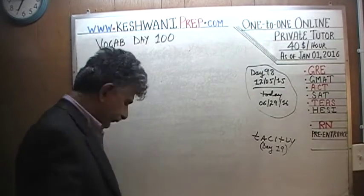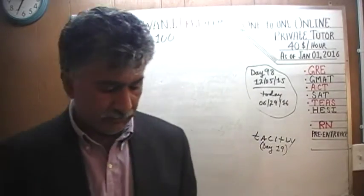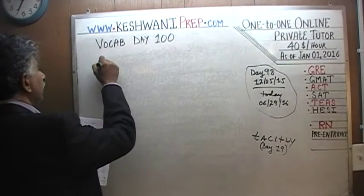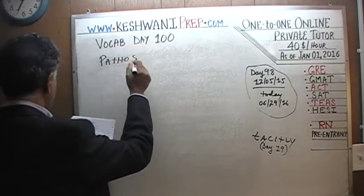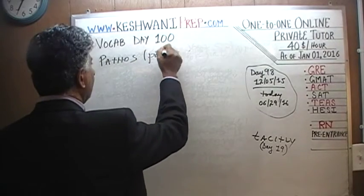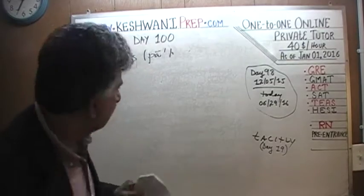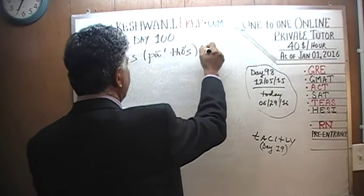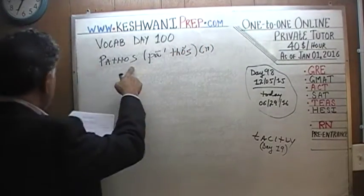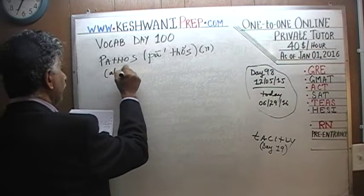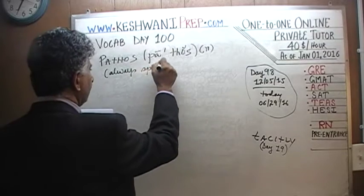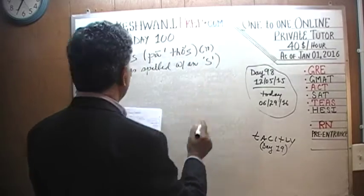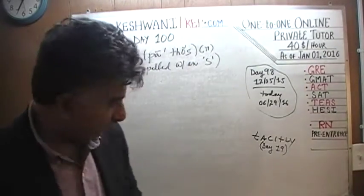The very first word we have for today is an interesting word — it's a word that I've been wanting to learn for the longest time. It's a tricky word. The word is pathos. It's a noun and it's always spelled with an S.